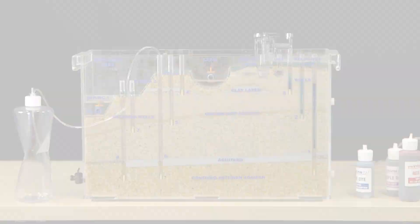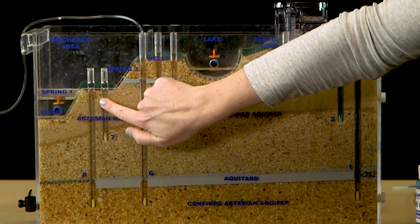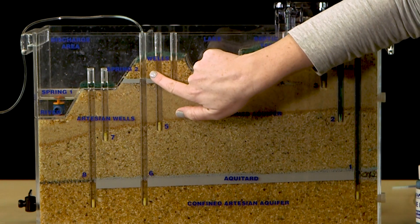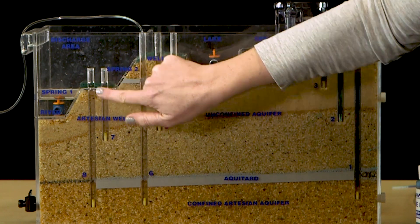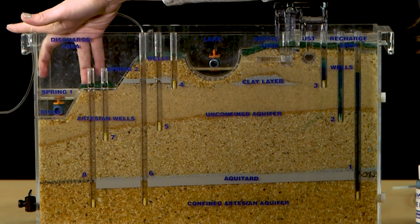There are also artesian wells and springs on the model that demonstrate how the geology within an aquifer can cause natural upwelling of groundwater to the surface. If the artesian wells don't appear to be flowing, swipe along the holes on the inside of the well with your finger to create a wicking action that begins the flow.